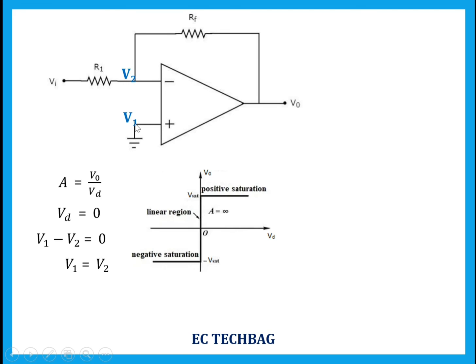In this point the potential is V1, and in this point the potential is V2 — both are the same. That means these two nodes are virtually shorted; this is called virtual short. These two nodes are not physically connected with each other, but their potential is the same.